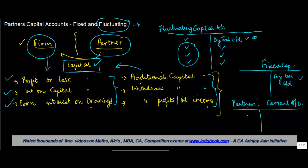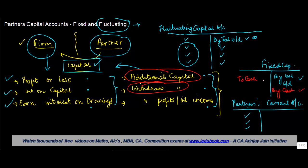Instead of posting these entries in the capital account, they are posted to the partners current account. The fixed capital account is only used for additional capital contributions — if he brings more capital into the firm, it comes in by cash and is added here. Or if he withdraws some capital, you make an entry here to cash account. So normally the capital account will remain fixed unless there is additional capital coming in or capital going out. All routine entries of profit, loss, interest, drawings etc. are passed through the partners current account.